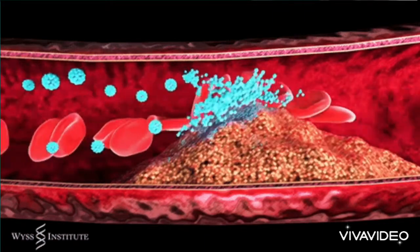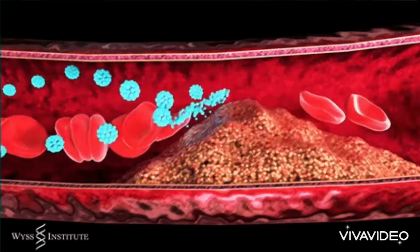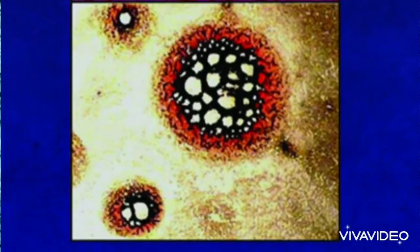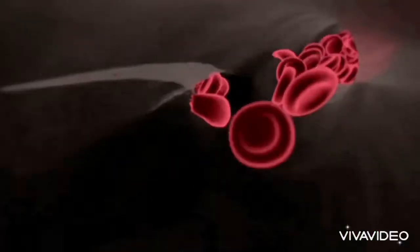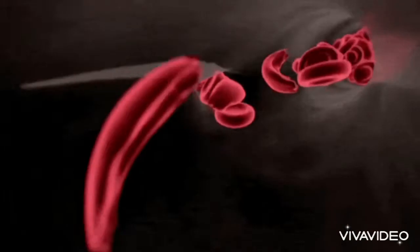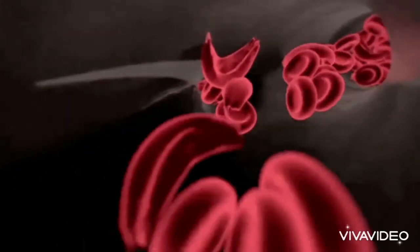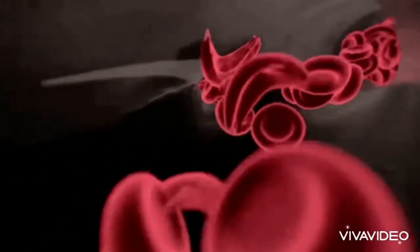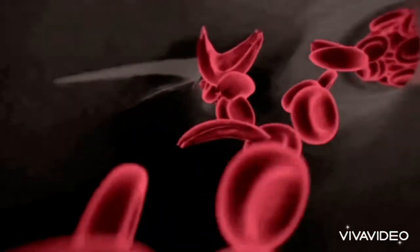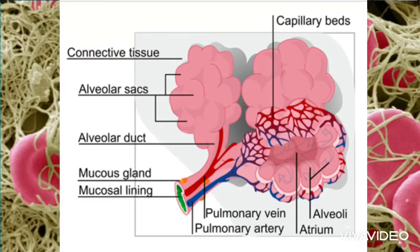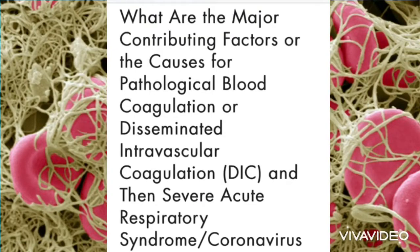But if this is happening inside the blood vessel — which is what's happening in every autopsy that's been done — there are clots in these COVID patients throughout the entire body. The question is: what's causing the blood to go into what is called DIC, disseminated intravascular coagulation, or pathological blood coagulation?